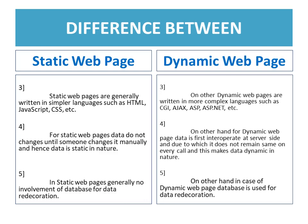For static web pages, data does not change until someone changes it manually, and hence data is static in nature. On the other hand, for dynamic web pages, data is first interpreted at the server side, due to which it does not remain the same on every call, making the data dynamic in nature.